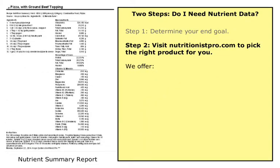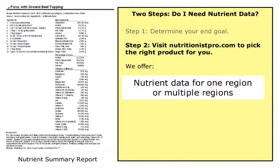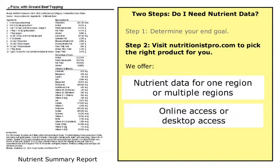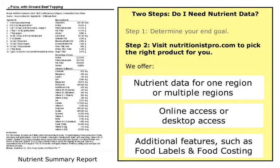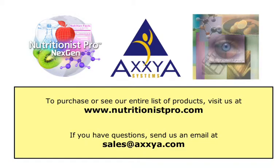Step 2: Visit NutritionistPro.com to pick the right product for you. We don't believe in one-size-fits-all, so pick a customized package that works for you. We can offer nutrient data for one region or multiple regions, online access or desktop access, and additional features such as food labeling and food costing. To purchase and see our entire list of products, visit us at www.nutritionistpro.com.